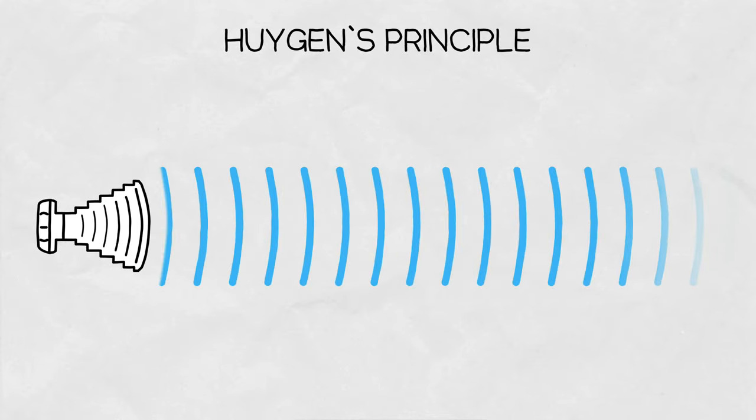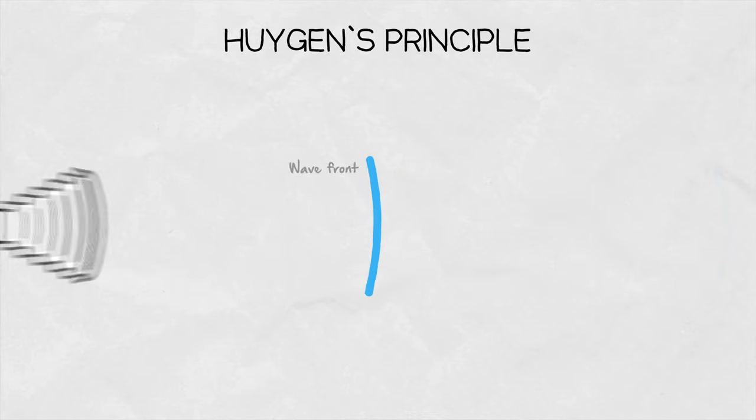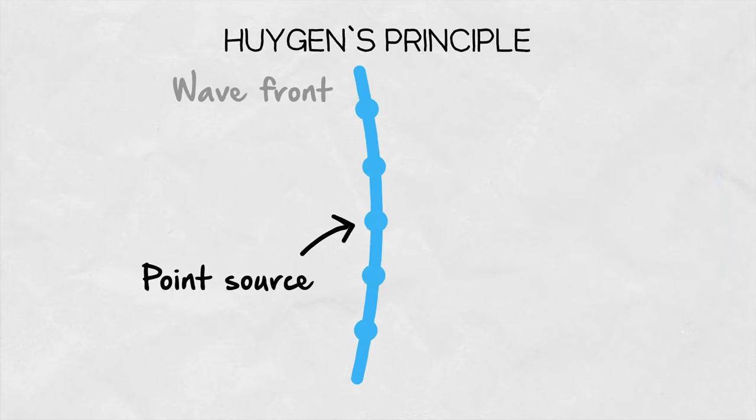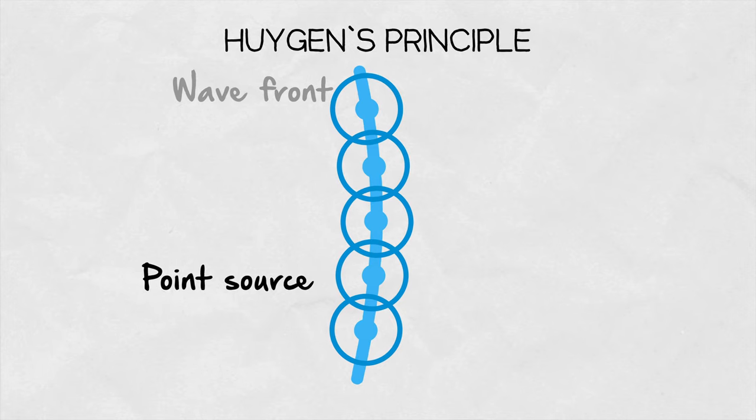The first fundamental concept is the Huygens principle. It simply states that every point on a wavefront can be considered as a source of new spherical waves. The envelope of these waves become new wavefronts.